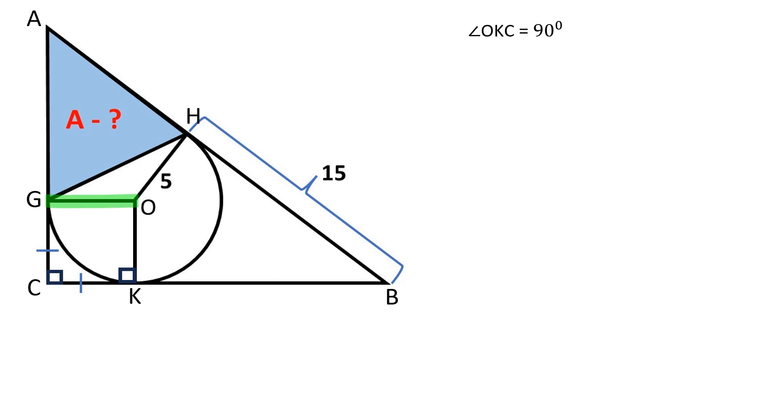Let's connect point O to point G. Angle OGC is also equal to 90 degrees. Since segments CG and CK are congruent, GCKO is a square. Each side of the square is equal to 5.